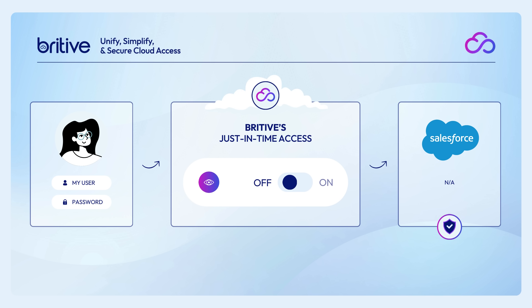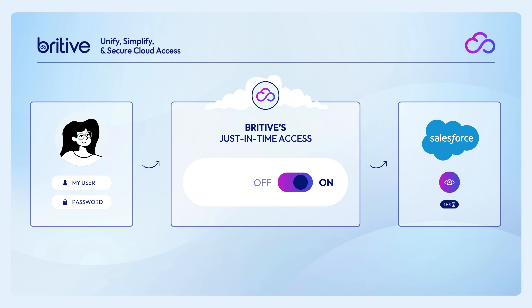With the Britive model, that user could log in directly to Salesforce to their account. But if they hadn't first gone through Britive to request their permissions — to check them out, in our terminology — they would find that they had access to nothing, not even read-only access. You could actually remove everything from their account. Zero standing privileges. When the user wants to perform an action, they check out the proper permissions in Britive that they're entitled to, and just-in-time, Britive leverages its integration and trust relationship with Salesforce to actually add those permissions to that user's account so they can do whatever they need to — for example, update some account records for customers.